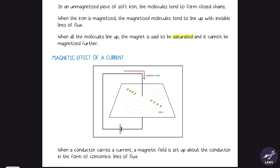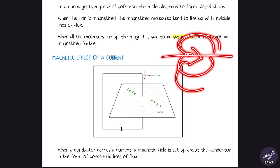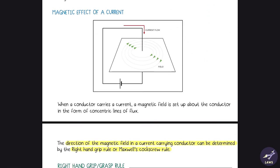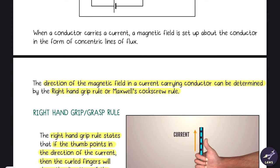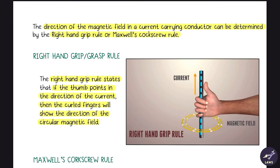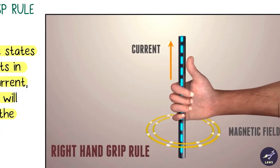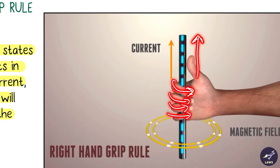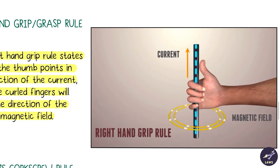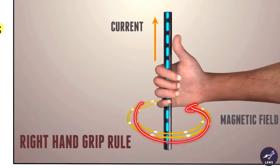Whenever a current flows through a conductor there will be a magnetic field. The direction of the magnetic field in a current-carrying conductor can be determined by the right hand grip rule. The thumb points in the direction of the current, and the curled fingers indicate the direction of the circular magnetic field around the conductor.